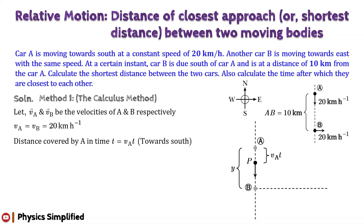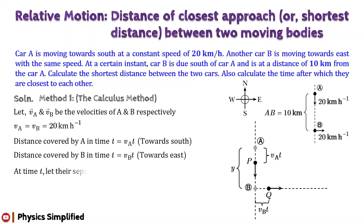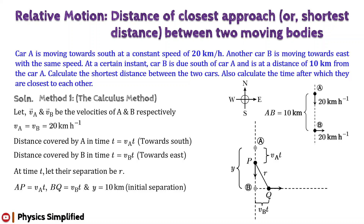Since car B moves towards east, its new position after the same time t, denoted by the point Q, is shown in the figure. The distance covered by B in time t, given by BQ, is equal to v_B × t. At this instant, their separation is given by the straight line PQ. The available information is: AP = v_A × t, BQ = v_B × t, and the initial separation y = 10 km. Therefore, BP = y − v_A × t.